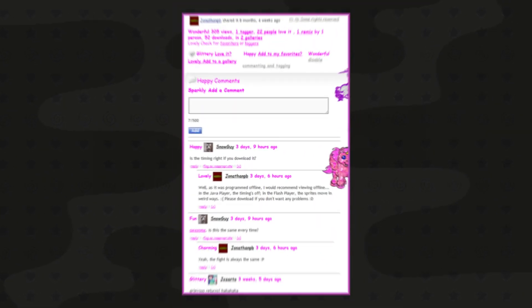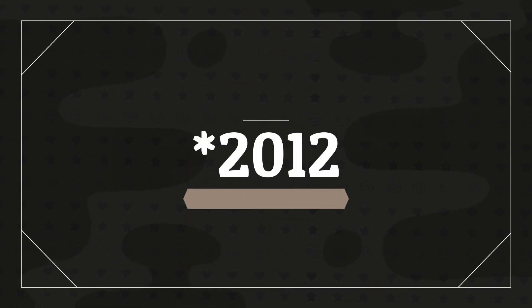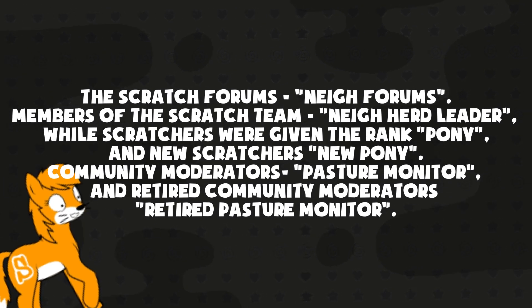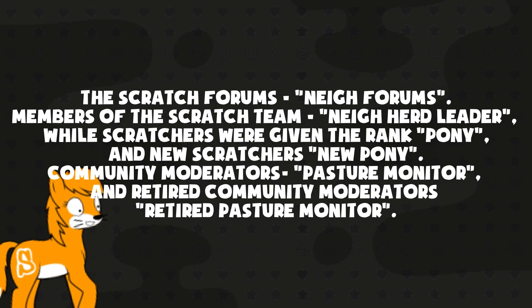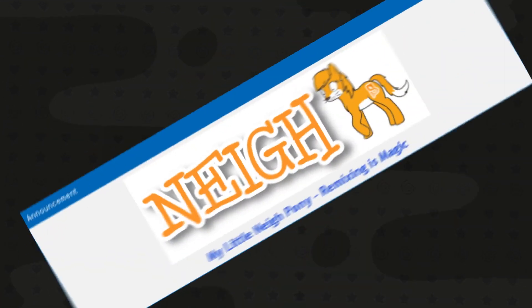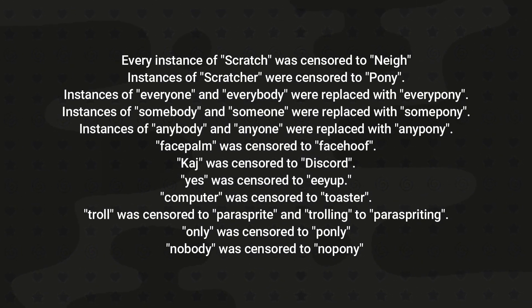Every instance of the word 'awesome' in the comments made a unicorn appear when clicked, or changed some text to a pink, dazzling, sugar-coated style. And in 2010 there was a My Little Pony theme: the Scratch forums were renamed to 'Neigh Forums,' Scratch team members were ranked 'Neigherd Leader,' Scratchers were given the rank 'Pony,' new Scratchers were 'New Pony,' and community moderators were changed to 'Pasture Monitor' and 'Retired Pasture Monitor.' Word filters were also added — every instance of 'Scratch' was censored to 'neigh,' and 'Scratchers' was censored to 'pony.'